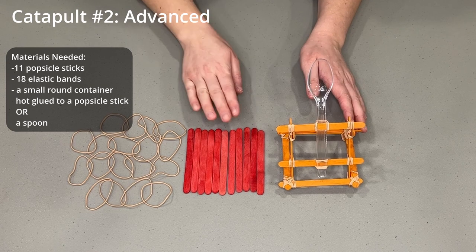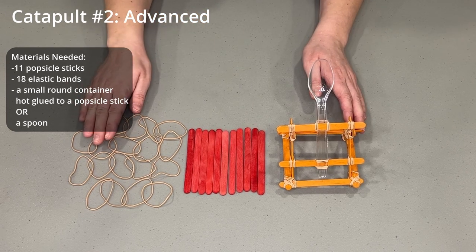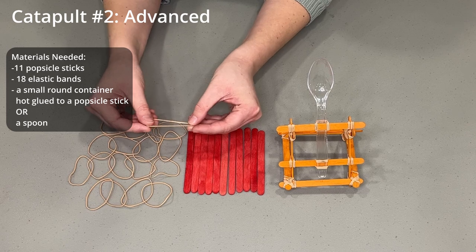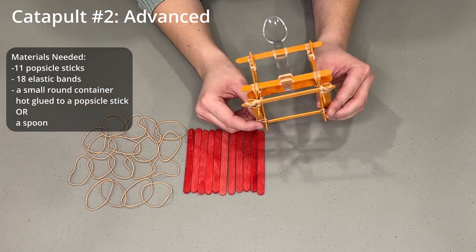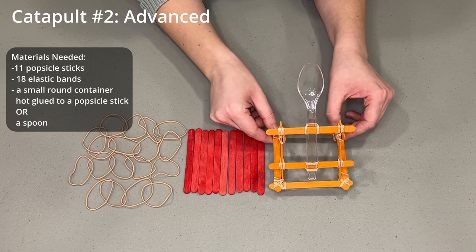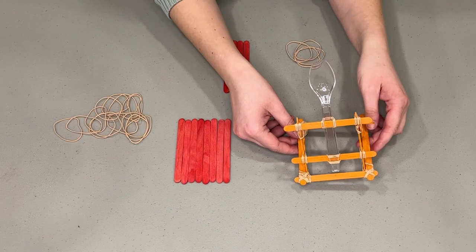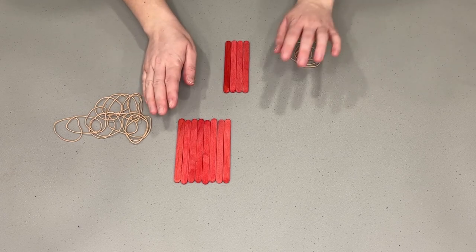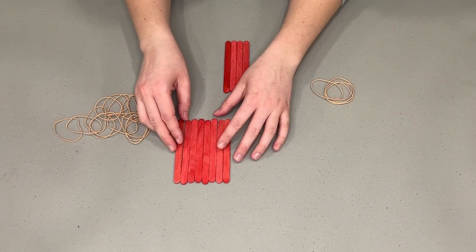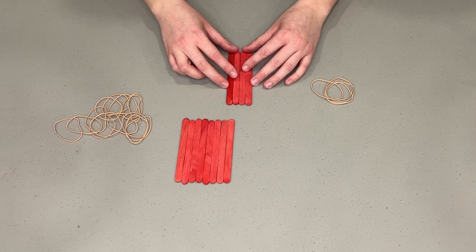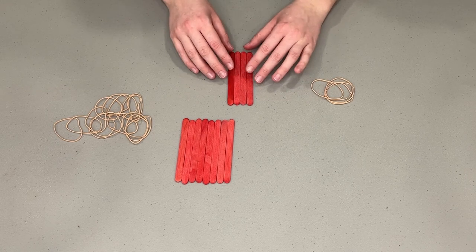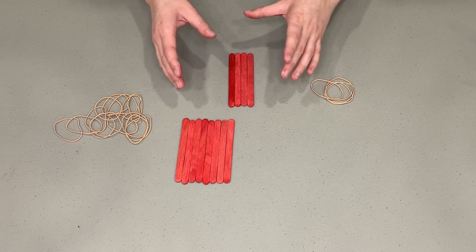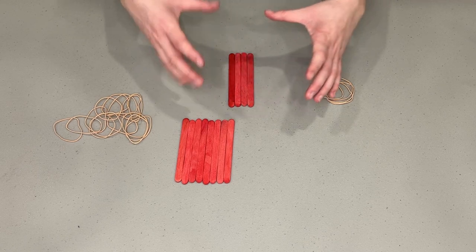For this one you will need 11 popsicle sticks and 18 elastic bands. For this one I did slightly smaller and thinner elastic bands because I find that a little bit easier. Since we're going to be using a lot of elastic bands on this one. Alright let's make the square that will be the base of our catapult. Now I should note that you want to find the flattest and straightest popsicle sticks that you can. Because the flatter and straighter they are the easier it's going to be to make the catapults keep its shape.